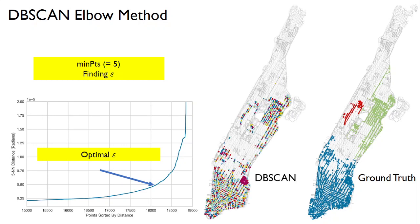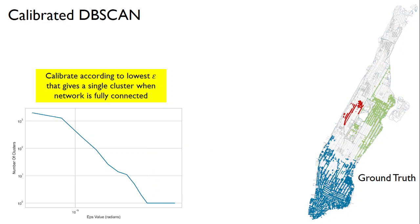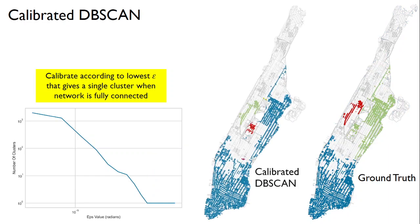DBSCAN applied to this data initially yields quite a poor result — the many spots of colors indicate the algorithm has found way too many clusters. To fix this, we calibrate DBSCAN on the network when it is fully connected, finding the lowest epsilon value that gives a single cluster. Applying this calibrated value to the network after nodes are removed gives 3 clusters, and the calibrated DBSCAN model performs much better.